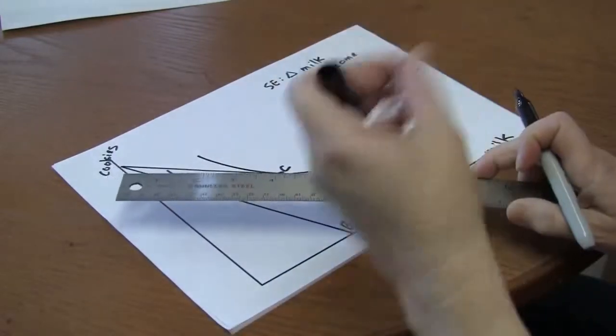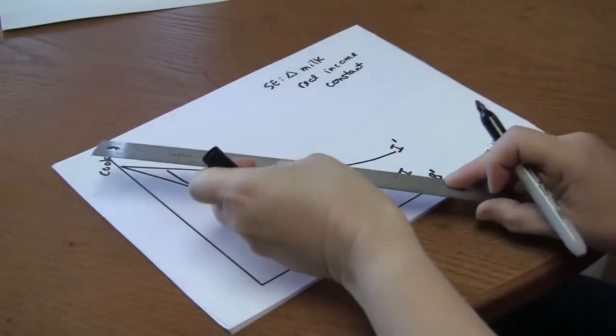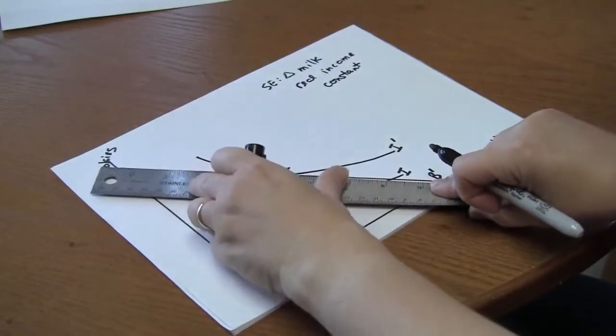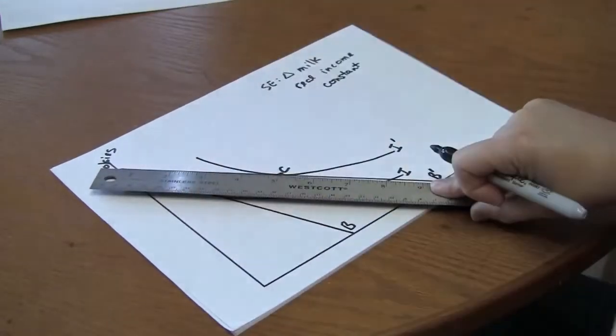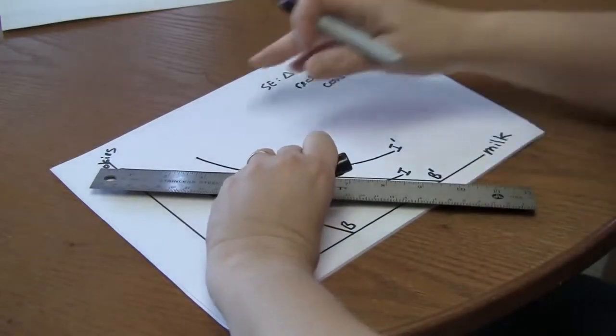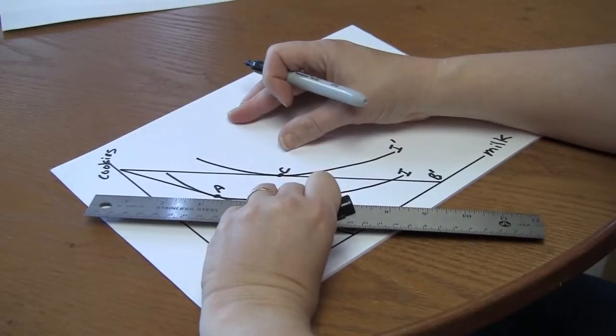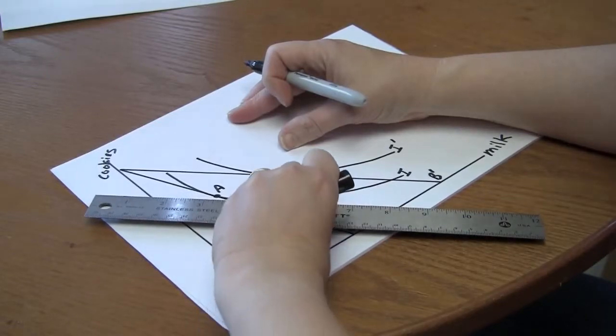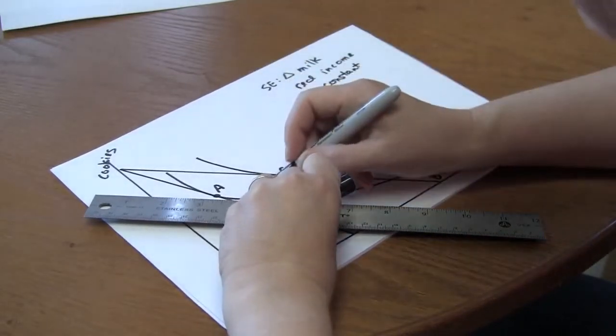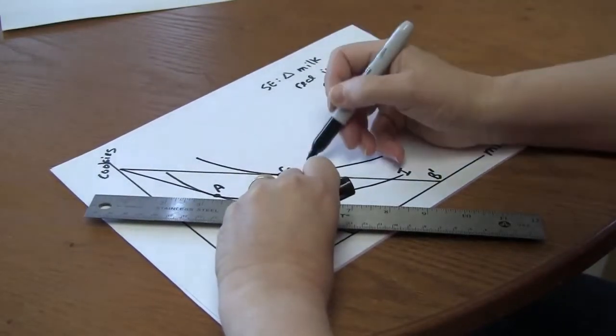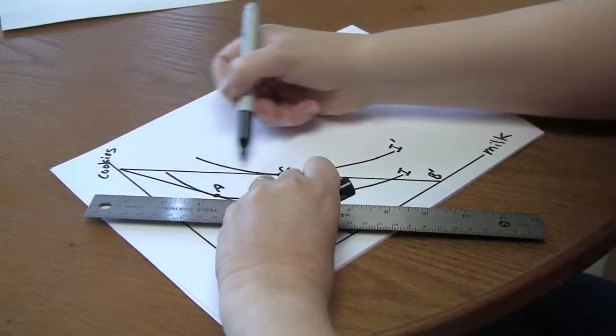So to do that I want to take the new prices, the price ratio, the new lower price ratio and then pull back until I'm on my original indifference curve. Something like that. So the important thing is parallel to the new indifference curve.